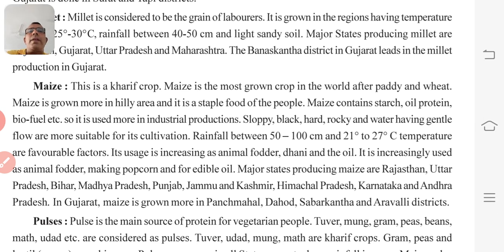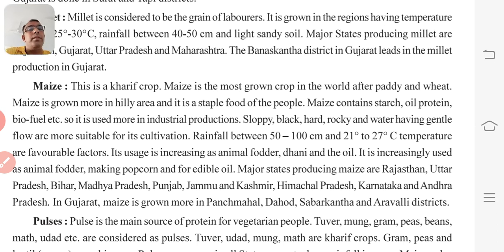The use of maize is increasing as animal fodder, dhani, and oil. The oil of maize is really good for health. It is increasingly used as animal fodder, for making popcorn, and for edible oil.